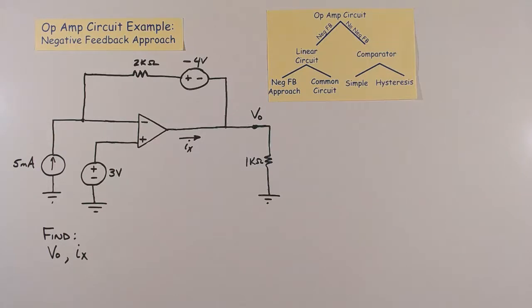To determine if negative feedback is present, we look for some connection between the output of the op-amp and the inverting input of the op-amp.